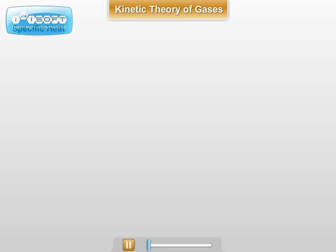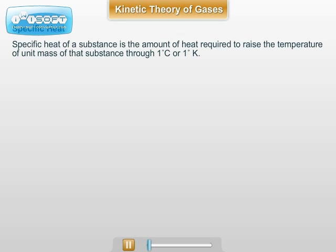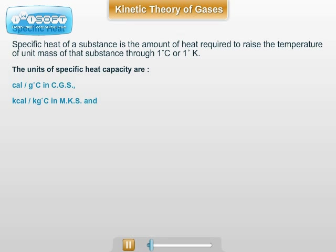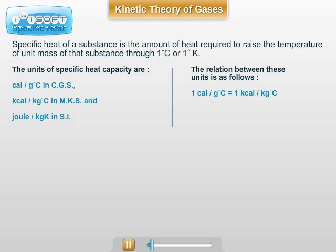In the other part of the chapter, we study specific heat. Specific heat of a substance is the amount of heat required to raise the temperature of unit mass of that substance through 1 degree Celsius or 1 degree Kelvin. The units of specific heat are calorie per gram degree Celsius in CGS, kilocalorie per kilogram degree Celsius in MKS, and Joule per kilogram Kelvin in SI. Such that 1 calorie per gram degree Celsius equals 1 kilocalorie per kilogram degree Celsius, equals 4.2 Joule per kilogram Kelvin, and 1 kilocalorie per kilogram degree Celsius equals 4200 Joule per kilogram Kelvin. Hence, specific heat is expressed in different units.